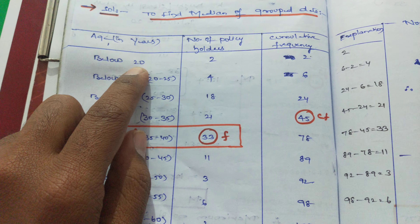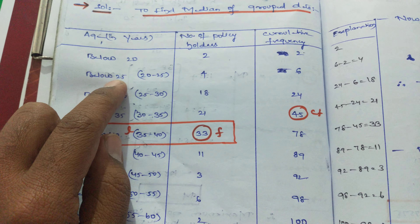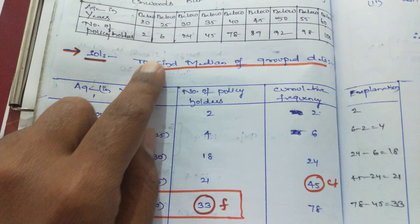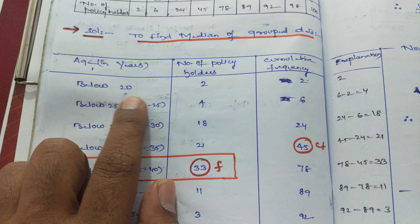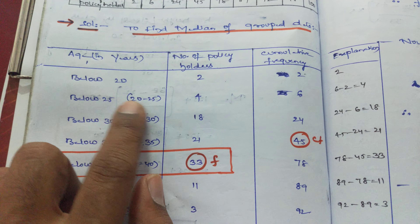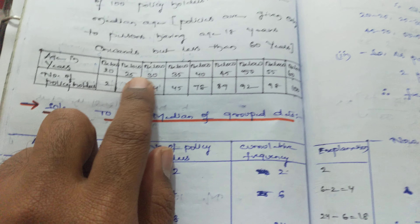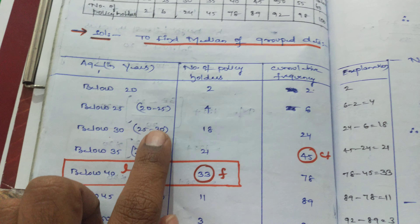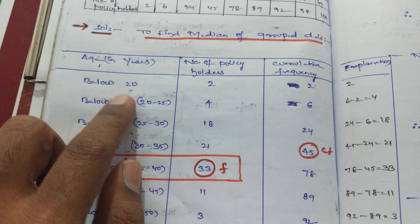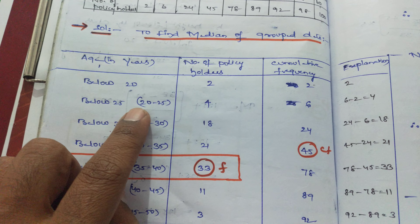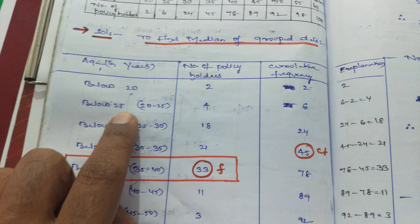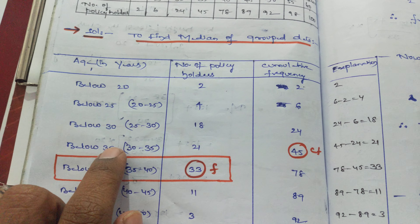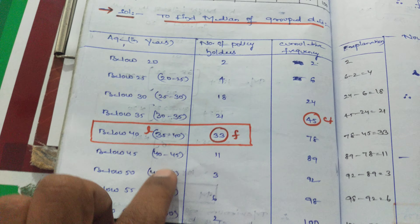Below 20 — the first observation you keep as it is. The second observation given is 'below 25'. So from the previous observation to the second observation, the class interval becomes 20 to 25. The third observation is 'below 30', so the class interval is 25 to 30. The fourth observation gives the third to fourth as a class interval. Like this, each class interval forms a range with a lower limit and upper limit. You leave the first observation as it is, then: second observation gives first-to-second as the class interval; third gives second-to-third; fourth gives third-to-fourth — and so on in sequence.